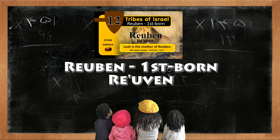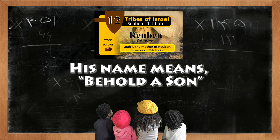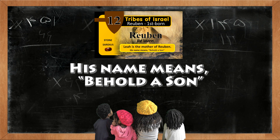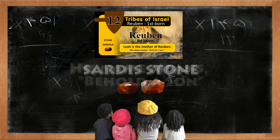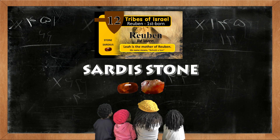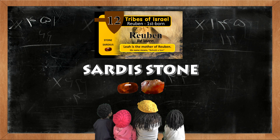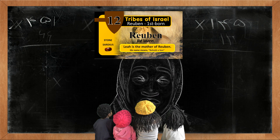Reuben is the firstborn son. His name means Behold a son. The Sardis stone represents the tribe of Reuben. Leah is the mother of Reuben.